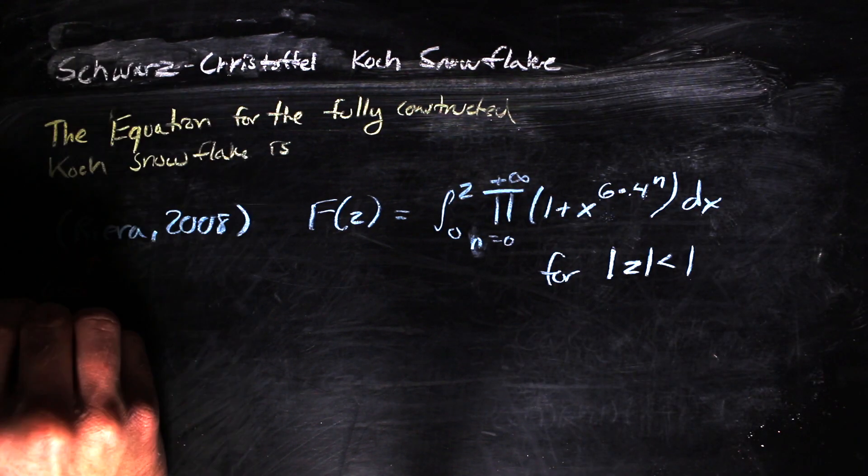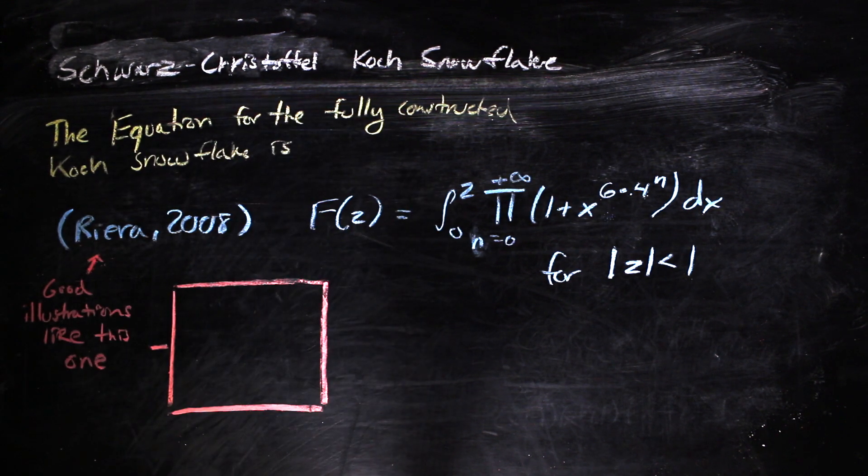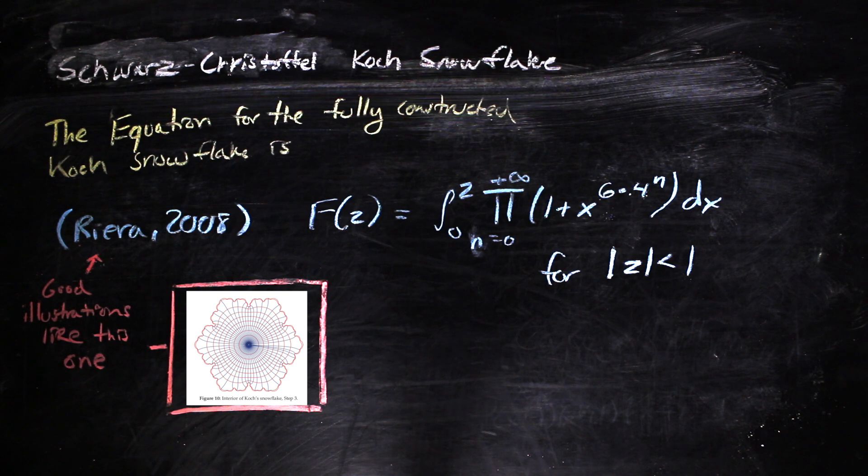He also gives the derivation for the map to the whole Koch snowflake as it appears here. The paper also does a good job at illustrating these different maps as well, which makes some really cool graphics like this one. So I definitely recommend that you take a look.